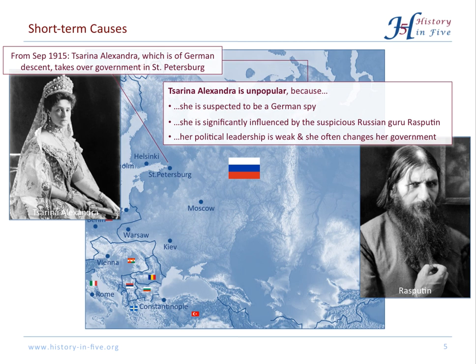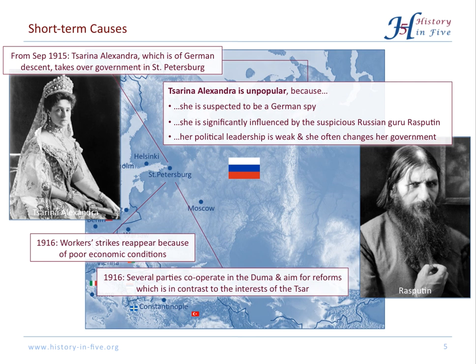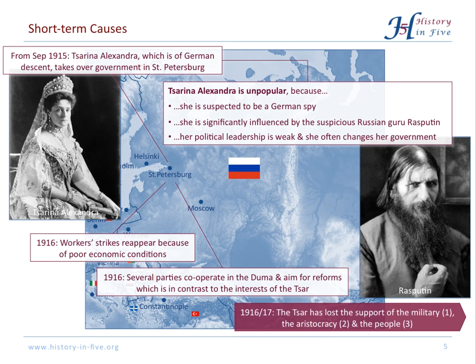In 1916, workers again went to the streets and protested against the poor economic conditions. In the Duma, several parties from different ends of the political spectrum cooperated and wanted reforms, which brought them into conflict with the interests of the Tsar. So at the end of 1916, beginning of 1917, the Tsar had no support whatsoever. He had lost the support of the military, the aristocracy, and the people.